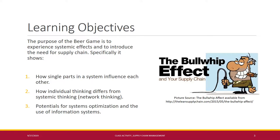The purpose of the beer game is to experience systematic effects and to introduce the need for supply chain. Specifically, it shows how single parts in a system influence each other, how individual thinking differs from systematic thinking — network thinking — and what the potentials are for system optimization and the use of information systems. The game is used to illustrate the bullwhip effect and the importance of timely and accurate communication along the supply chain.